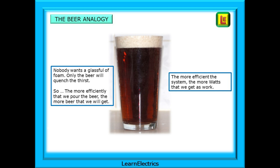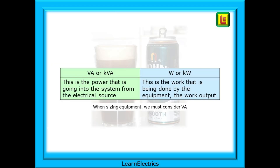Think of this electrically: the more efficient the equipment, the more watts we get to do the work. VA or kVA is the power going into the system from the electrical source; W or kW is the work being done by the equipment — the work output. Because watts will almost always be smaller than VA, we should size installations and equipment by VA. If the equipment and cabling can take the VA, then it can take the watts. And don't forget other factors affecting cable choices: temperature, grouping, insulation and so on.